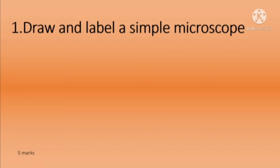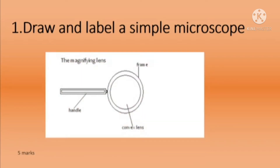First question: draw and label a simple microscope. You know what a simple microscope is — we call it a hand lens. When you draw this hand lens, you have to draw the handle, the outer frame, and the convex lens. Then you have to label all these parts: handle, frame, and convex lens. This is called a simple microscope, magnifying lens, or hand lens.